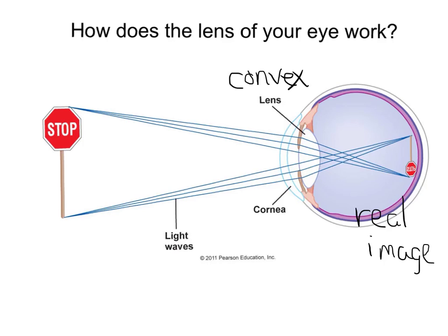That information is transmitted through the optic nerve to your brain, which actually inverts that and makes that image right side up. So you see the world right side up.